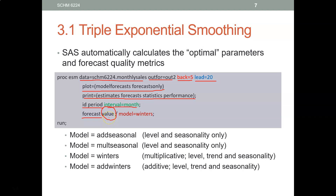I want SAS to forecast the variable named 'value,' which is in this data set. Which model do I want SAS to use? Here I tell SAS to use the Winters model. You have four options: winters, add_winters, add_seasonal, and multi-seasonal.